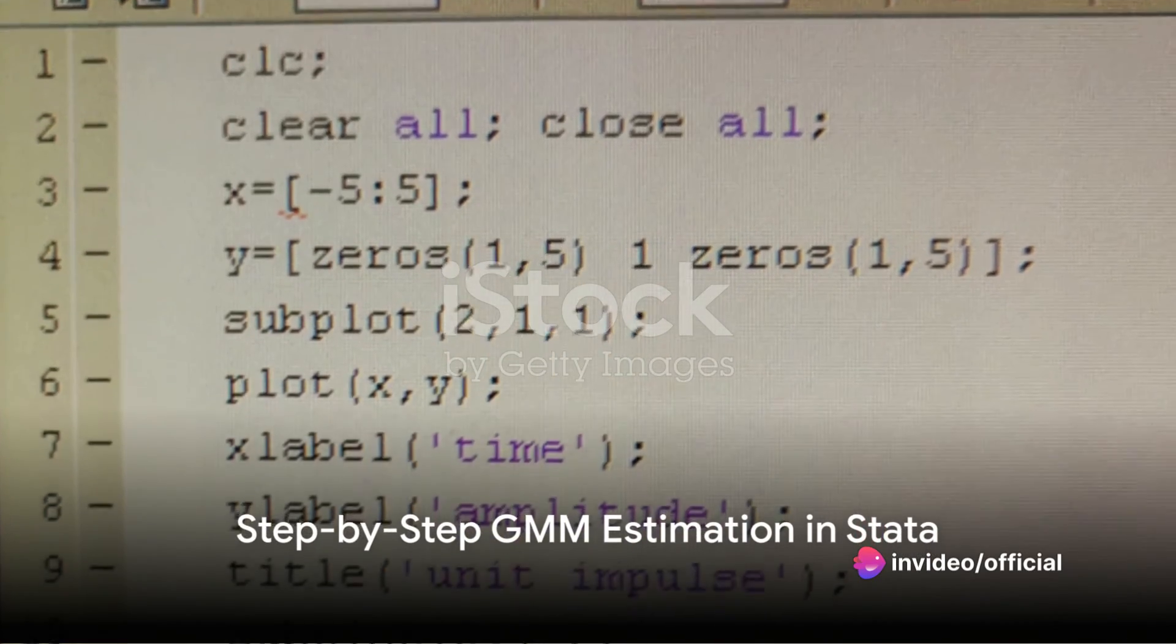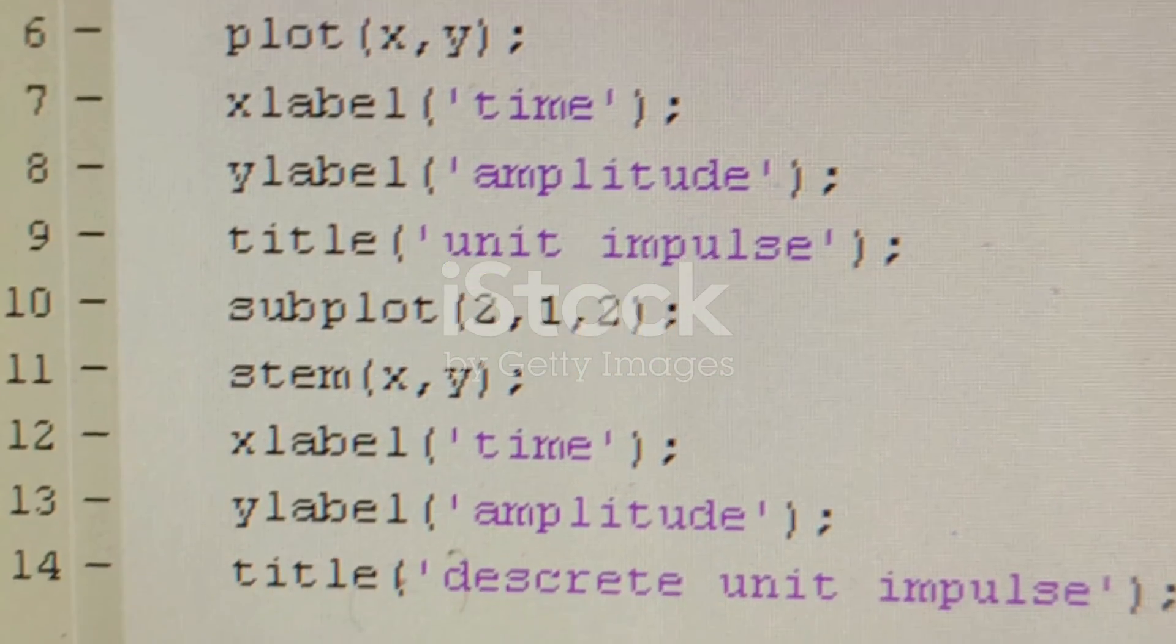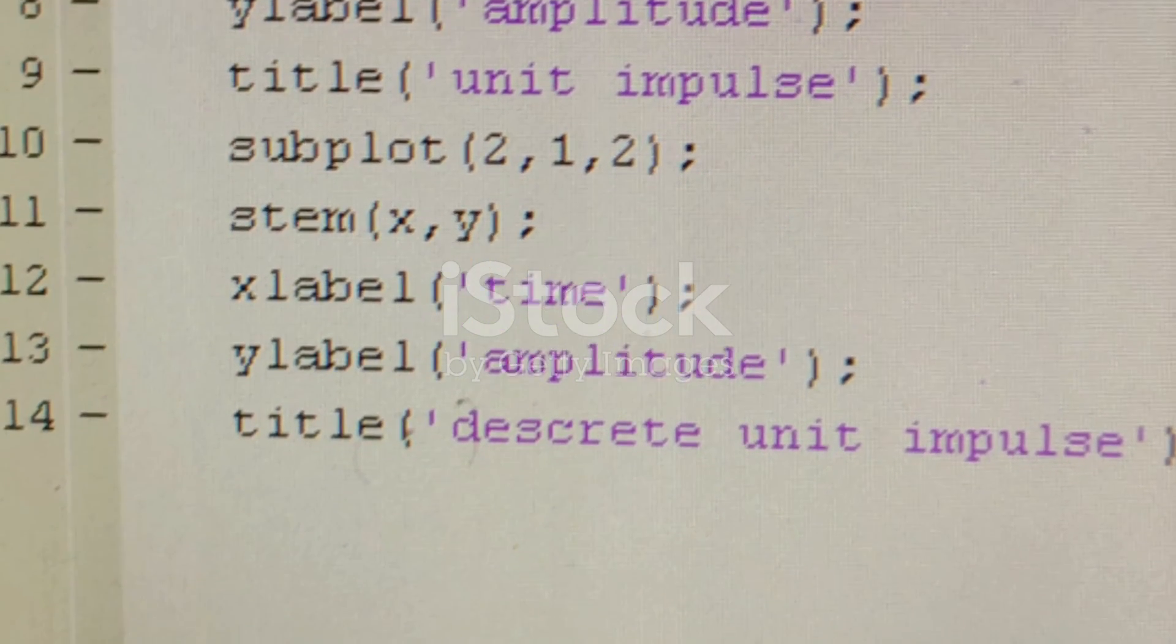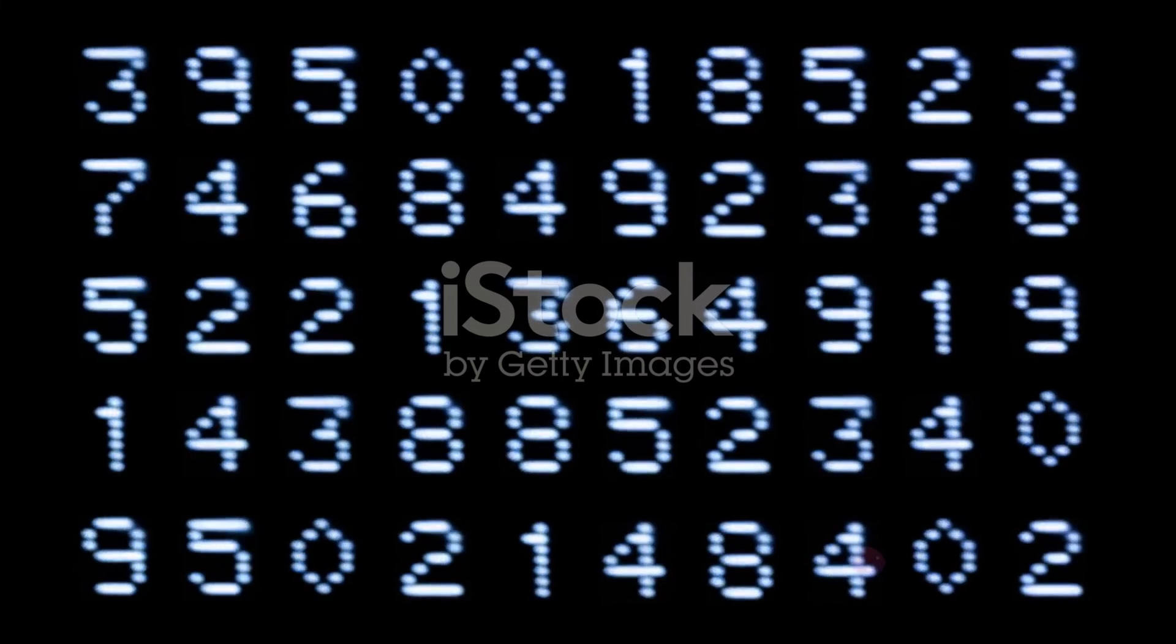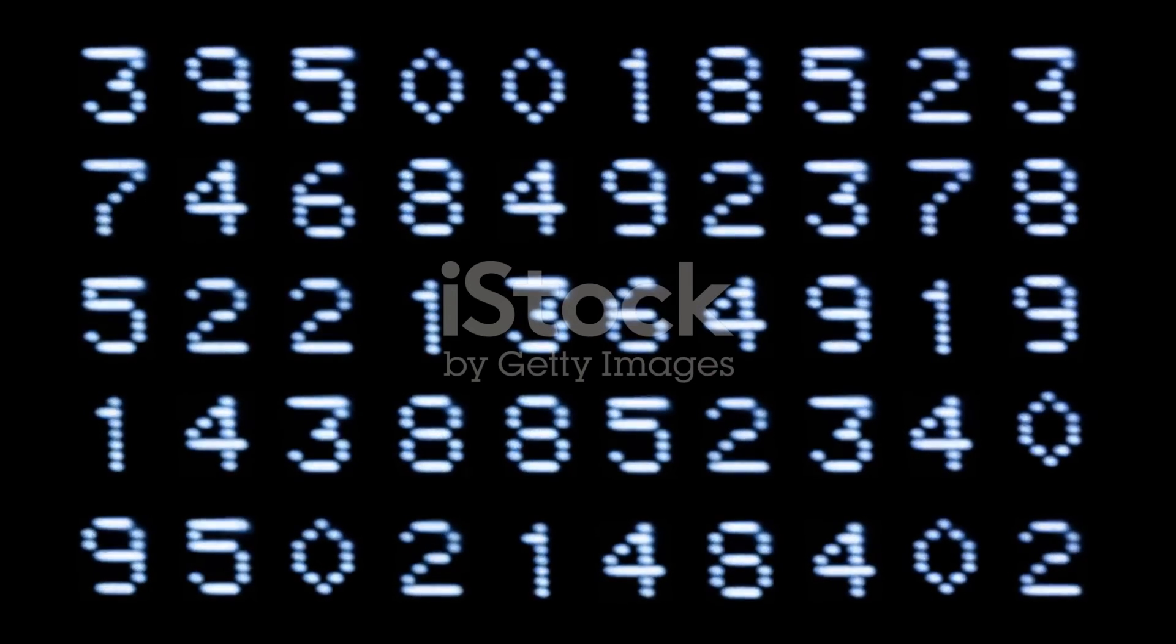It's time to get our hands on Stata and start the GMM estimation process. First things first, we need to input our data into Stata. This is done through the Use command, followed by the dataset name, for instance, UseMyData. Remember to have your data organized in a way that Stata can comprehend. Each row should represent an observation, and each column should represent a variable.